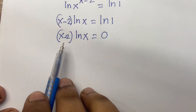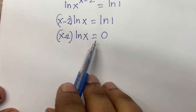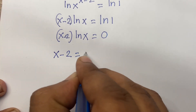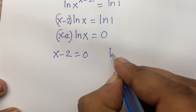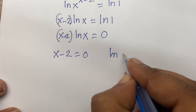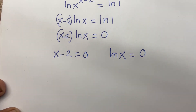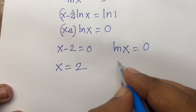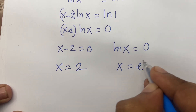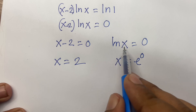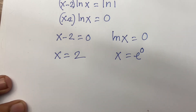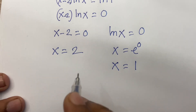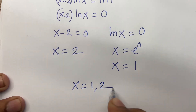Here are two cases: x minus 2 and ln x. So I can say x minus 2 equal to 0, or ln x equal to 0. From the first case, x equal to 2. From the second case, x equal to e to the power 0, so x equal to 1. Our final answer is x equal to 1 and x equal to 2.